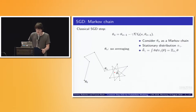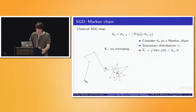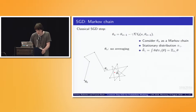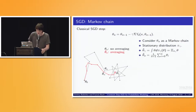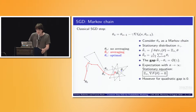Since we consider constant step size SGD, we can represent it as a homogeneous Markov chain. Under some regularity assumptions it converges to a stationary distribution, which we call pi_gamma, and it starts to oscillate around some point theta-bar_gamma. What people usually do is use averaging, and after this averaging we start to converge to this point. Still, there is a gap between this expectation and the optimal value of parameter theta-star, and this gap is of order of the step size.